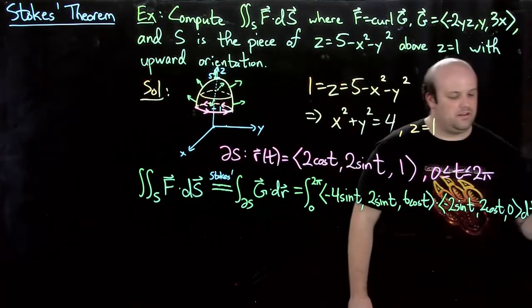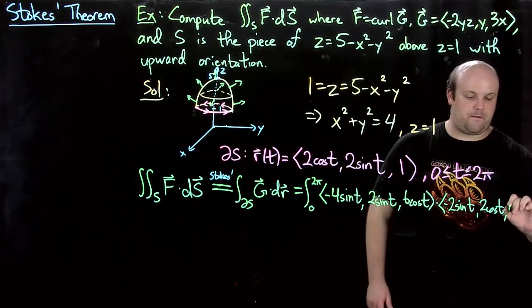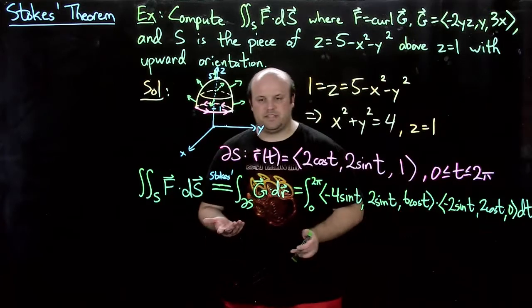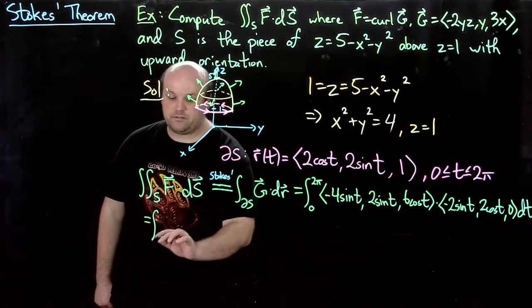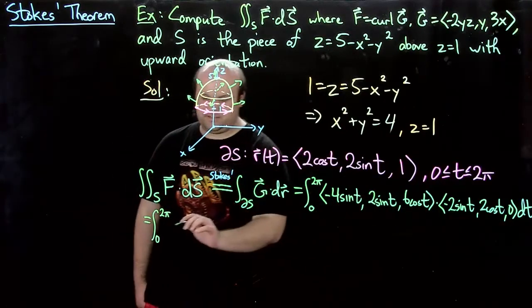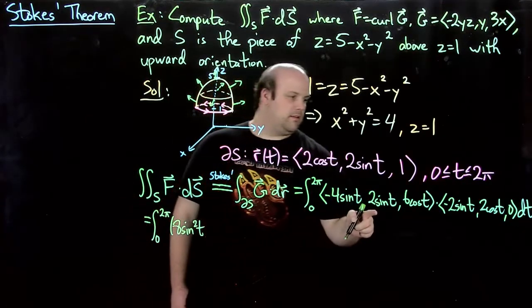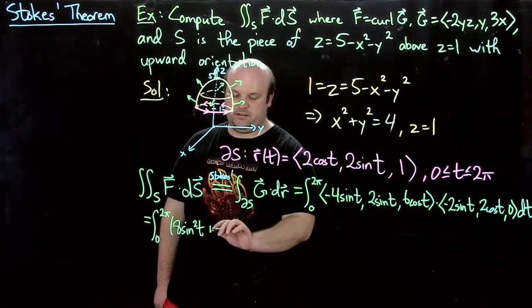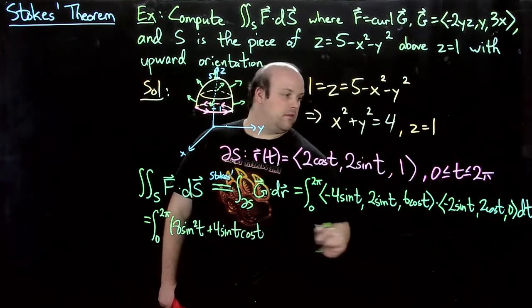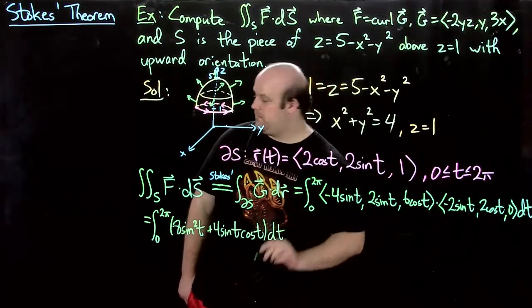It's a little off the edge of the screen there. See if I can squish that in a bit. Okay. So now just do this. This is an integral from 0 to 2π of 8 sine² t plus 4 sine t cosine t, plus 4 sine t cosine t. Plus 0, so just this, dt.